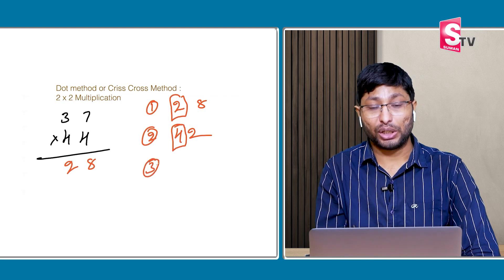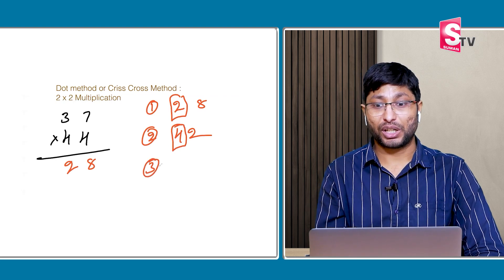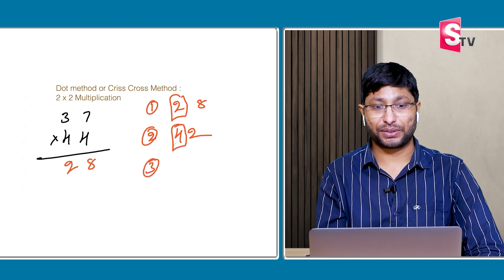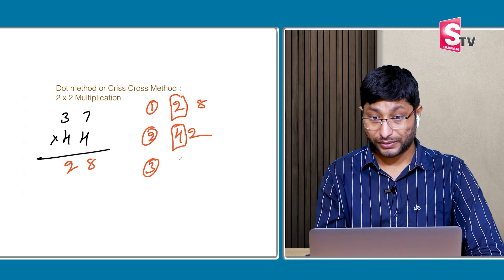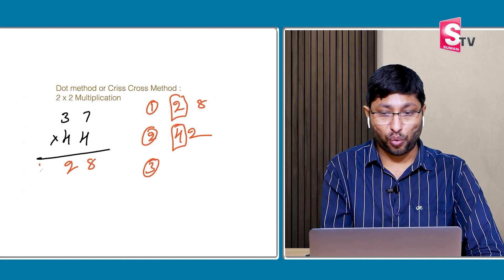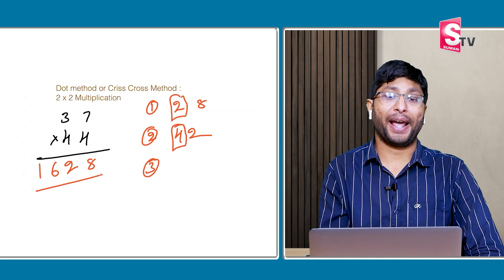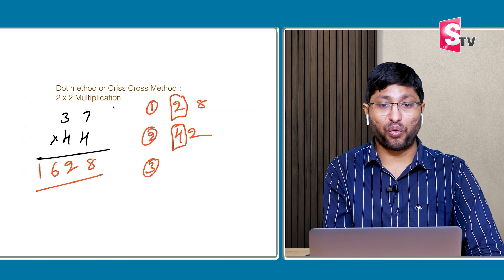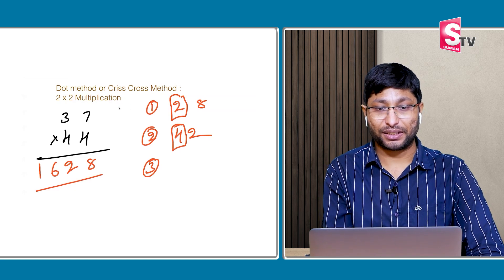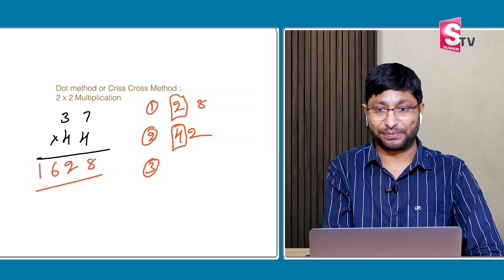Step 3: 3 × 4 = 12. Plus 4 carry = 16. The answer is 1628. Hope you understood.